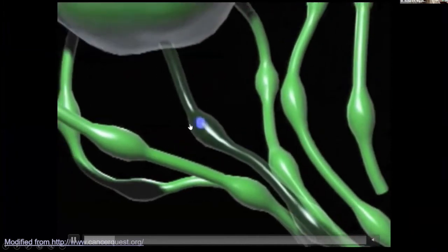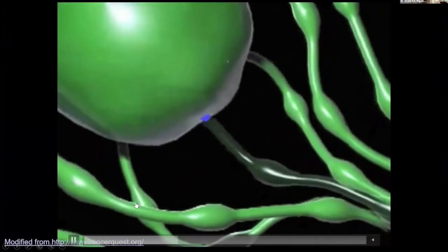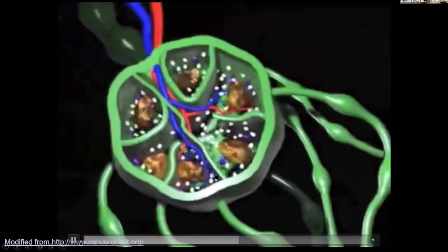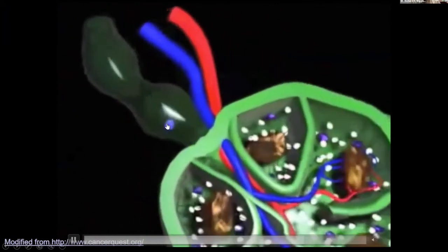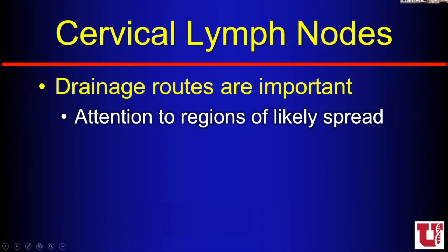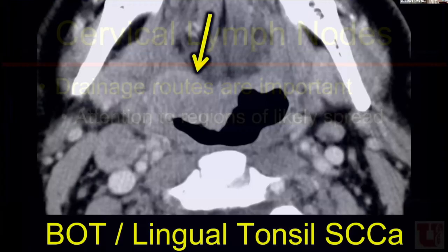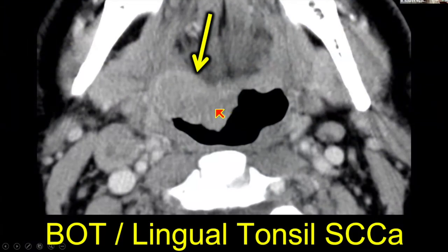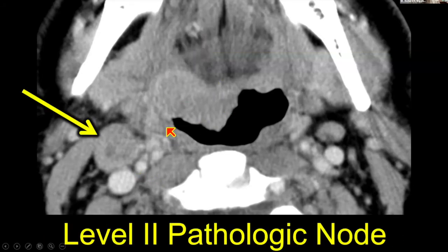When we think about that cancer cell going in the afferent limb of the lymph node, is it going to stop there or pass through to the next node in the chain? Drainage routes are very important — there are four big reasons. First, they draw attention to regions of likely spread. If I have a tumor at a certain location, I think about what lymph nodes drain that area. I know that base of tongue and palatine tonsil often go to level two, so I'm going to be more suspicious of those nodes and even more suspicious of contralateral nodes if the tumor crosses midline.